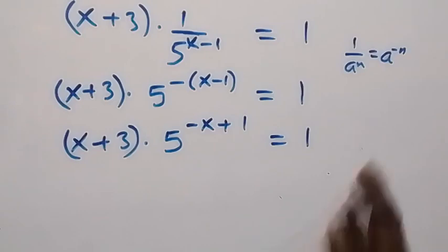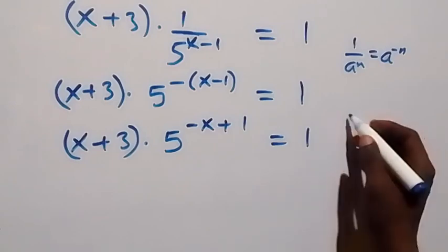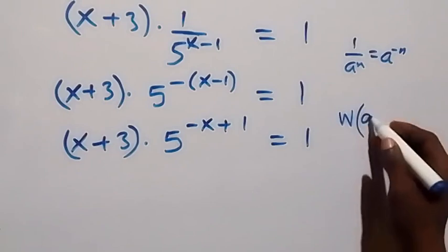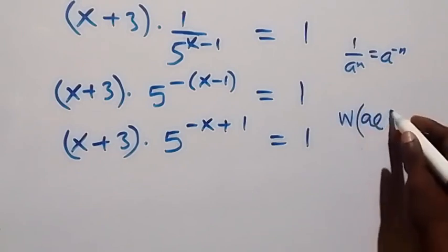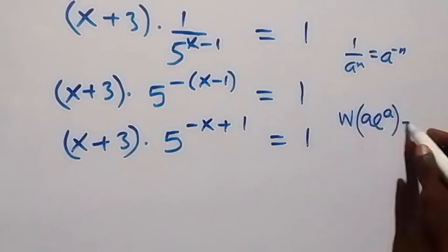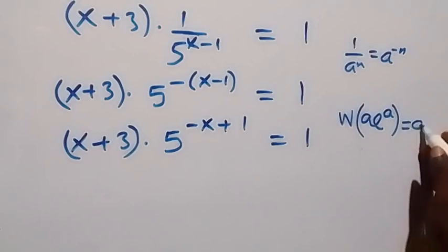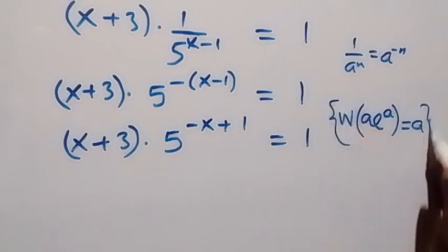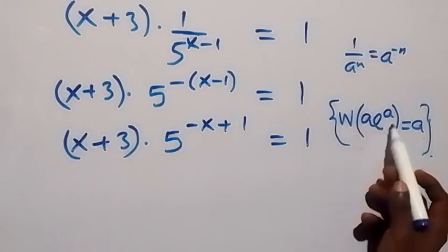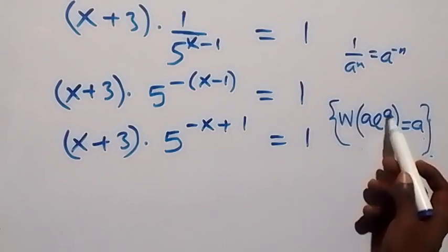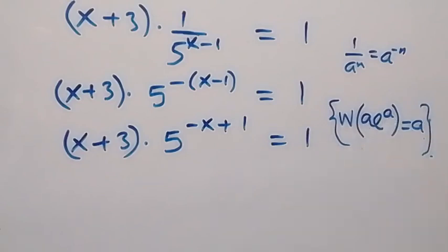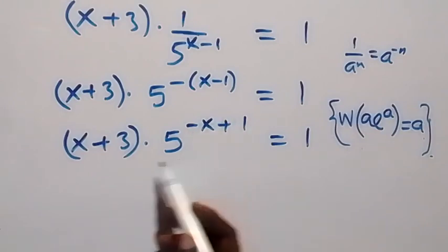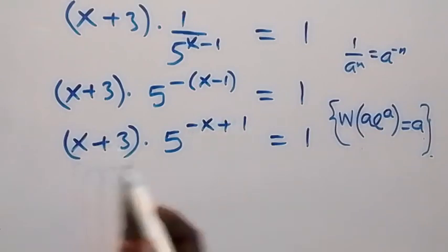Apply the Lambert W function like this: where we have W into bracket a times exponent a, this is the same thing as a, from the Lambert W function. Now what we have here — we have an exponent, then the power and the coefficient. I need to make this power become like the coefficient form required by Lambert W first, so let's try to make this power match.